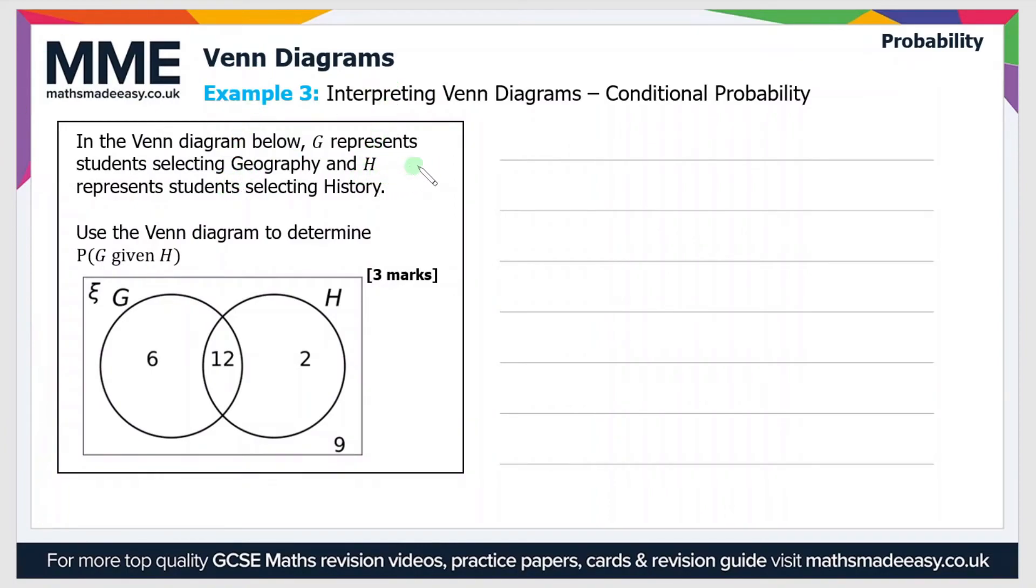So moving on to the third part then. In the Venn diagram below, G represents students selecting geography, and H represents students selecting history. Use the Venn diagram to determine the probability of geography given history.